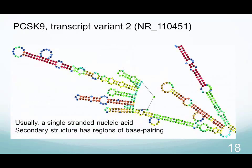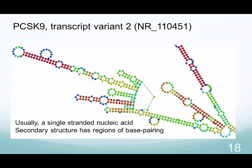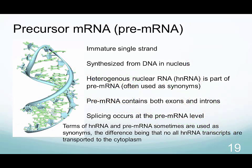This is an example of the estimated secondary structure of the non-coding transcript variant 2 of the PCSK9 gene. The presence of loops in the RNA structure may define its functions and stability. The secondary structure has regions of base pairing similar to those in DNA molecules. For the majority of molecules to be functional, a maturation process is required. In the case of messenger RNA, molecules originate as precursors or pre-mRNA that is synthesized from DNA in the nucleus.